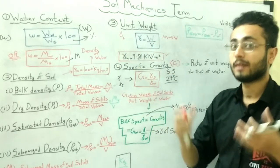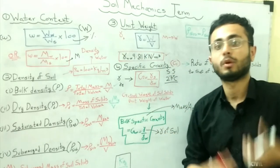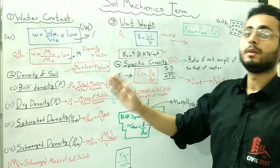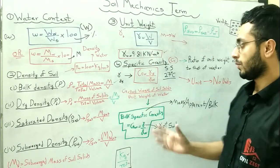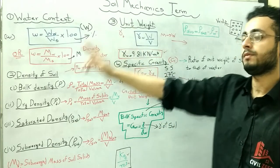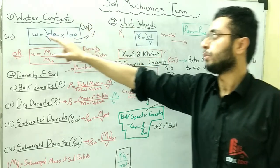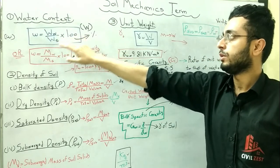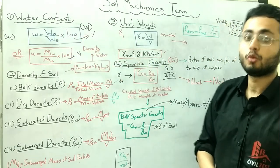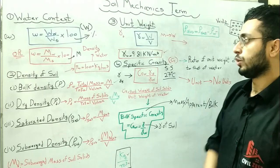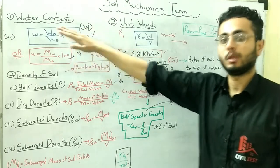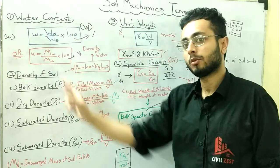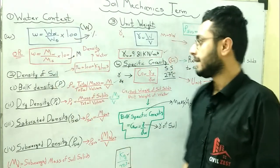To summarize today's lecture: water content, denoted by small w or omega, equals capital Ww divided by Ws multiplied by 100. It is expressed in percentage and has no units since it is a ratio of two same quantities. It can be represented in terms of both weight and mass.